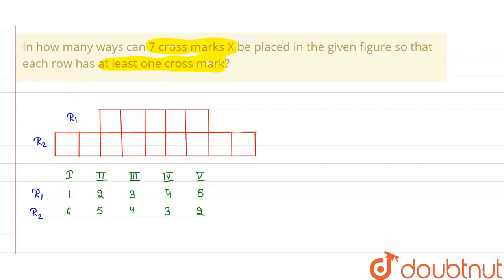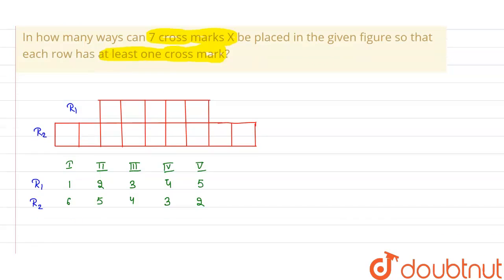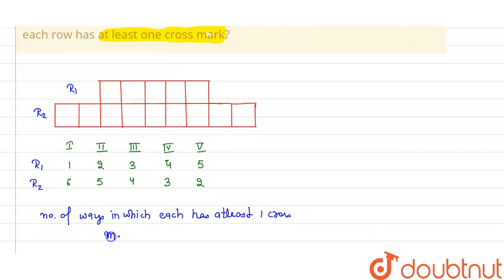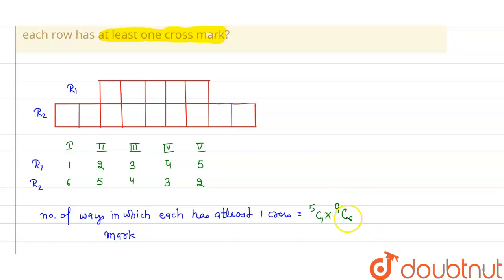Now we calculate the number of ways in which each row has at least one cross mark. This equals: Case 1 — from the five places in row one we choose one, so 5C1, and from the nine places in row two we choose six, so 9C6.